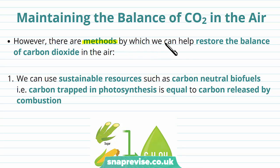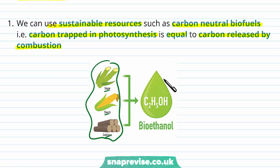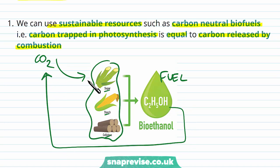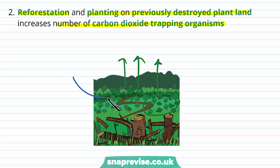We are trying to carry out methods to help restore the balance of carbon dioxide in the air. One method is using sustainable resources such as carbon-neutral biofuels, where carbon trapped in photosynthesis is equal to the carbon released by combustion. By using fuels from plants — like sugar, starch, and cellulose — they trap CO2 into their biomass through photosynthesis and can make fuel for our machines. This releases CO2 back into the atmosphere, but it gets absorbed back into the plants again. If the amount released equals the amount absorbed, this is sustainable. We can also try reforestation — planting on previously destroyed land — to increase the number of carbon dioxide-trapping organisms. More trees means more absorption of CO2 from the atmosphere through photosynthesis, which reduces the level in the air. These procedures could help lower and restore the levels of carbon dioxide in the atmosphere.